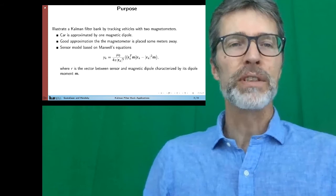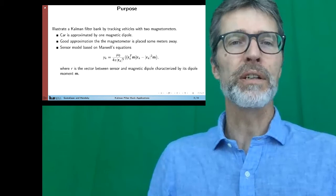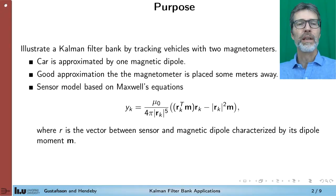So the purpose of this lecture is to illustrate how a Kalman filter bank can be used to monitor a traffic intersection using a network of two magnetometers.